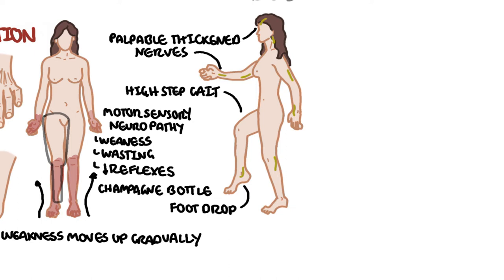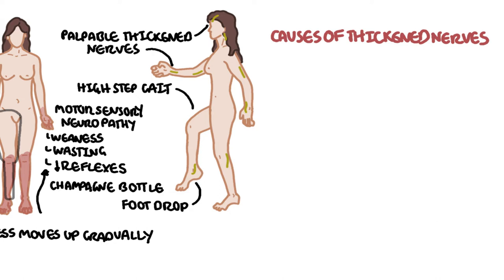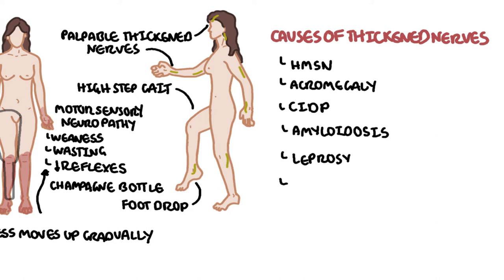Important causes of thickened nerves include Charcot-Marie-Tooth disease, which is a hereditary motor and sensory neuropathy; acromegaly; chronic inflammatory demyelinating polyneuropathy; amyloidosis; leprosy; sarcoidosis; and neurofibromatosis.